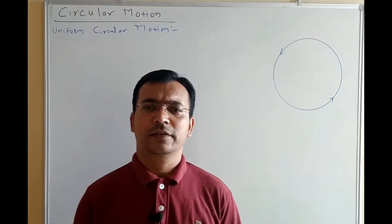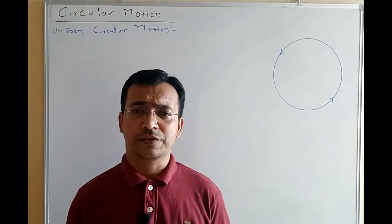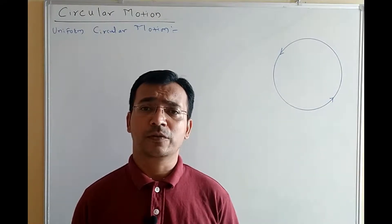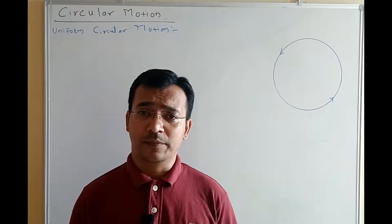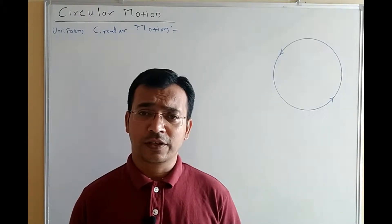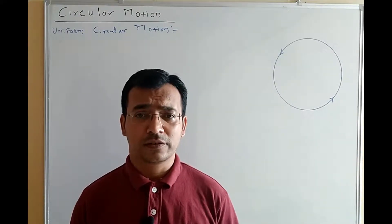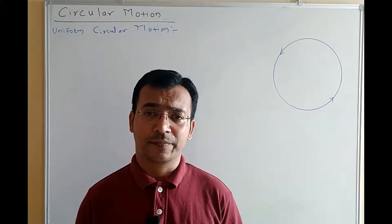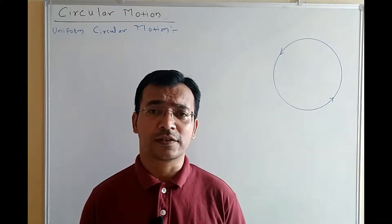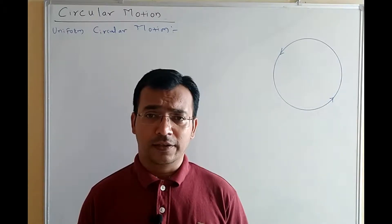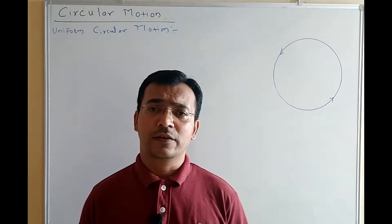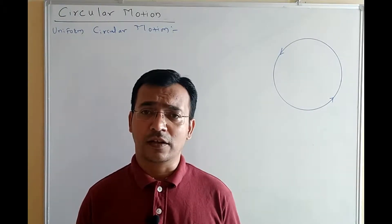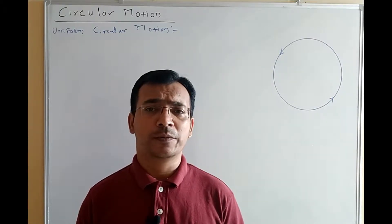Hello students. What is motion? What is a stationary object? What are the types of motion? What are circular motions? We have seen that circular motion has three parameters: angular displacement denoted by theta, angular velocity denoted by omega, and angular acceleration denoted by alpha. For these three directions, we used the right-hand rule. In the previous lecture, we have seen the relations between linear velocity v and angular velocity omega, in both scalar form and vector form.